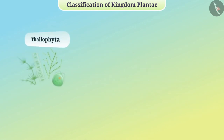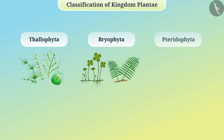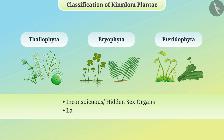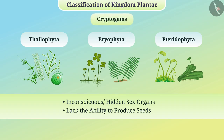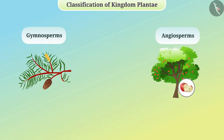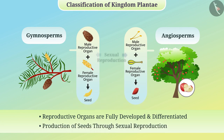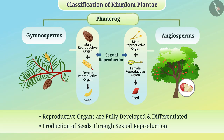Among the subclasses, Thallophyta, Bryophyta, and Pteridophyta have very inconspicuous or hidden sex organs and they lack the ability to produce seeds, so they are called cryptogams. In gymnosperms and angiosperms, however, the reproductive organs are fully developed and differentiated, and they produce seeds through sexual reproduction — hence these groups are called phanerogams.